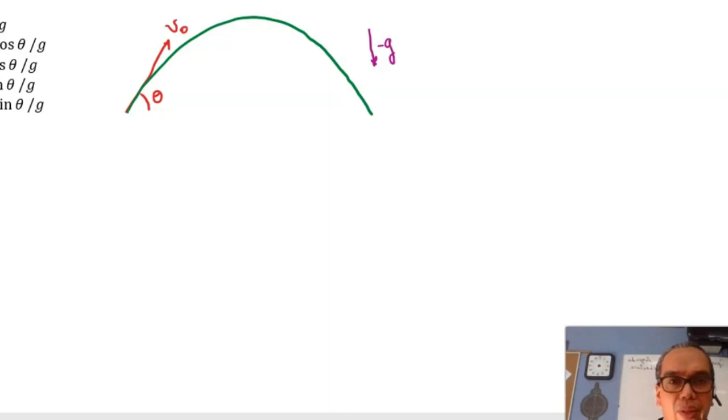The first one would be that you could calculate the time for the object to reach the maximum height. At the maximum height, we know that the final vertical velocity must be zero and the initial vertical velocity is v0 sine of theta.